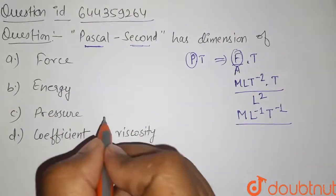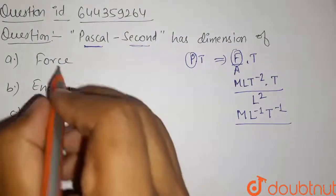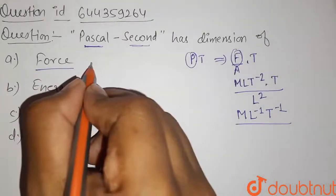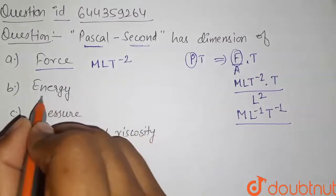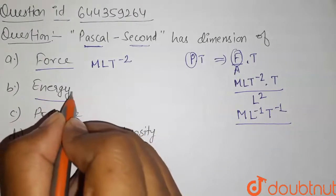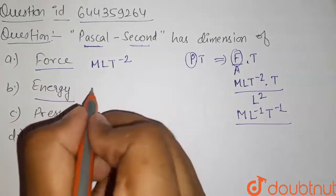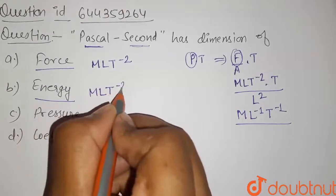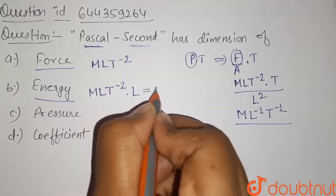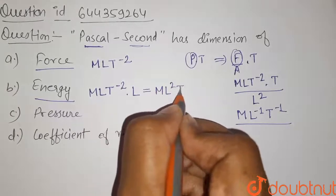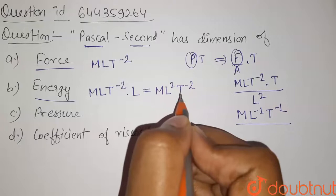Now in each case we will find the dimension. Now for force the dimension is given by MLT^-2. The dimension of energy is given by force into displacement. So its dimension will be MLT^-2 that is force into displacement. So it will be equals to ML^2T^-2.